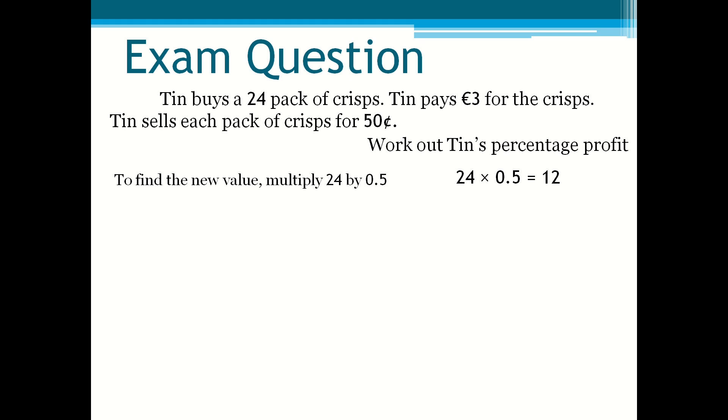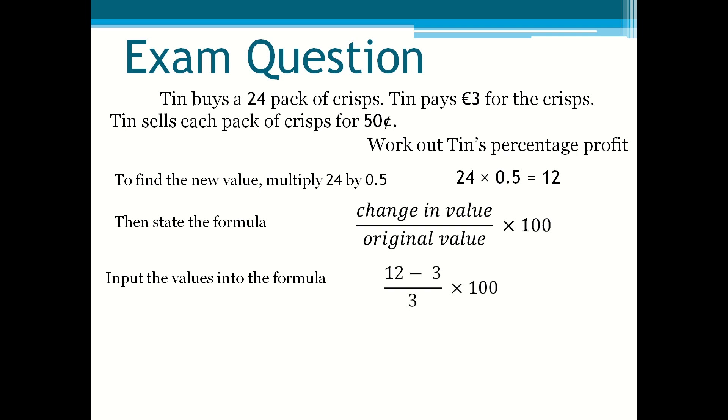Then you state your formula and then you input the values into the formula. So it would be 12 minus 3 over 3 multiplied by 100. 12 minus 3 is 9. So 9 over 3 times by 100 equals 300%. Tin makes a 300% profit.